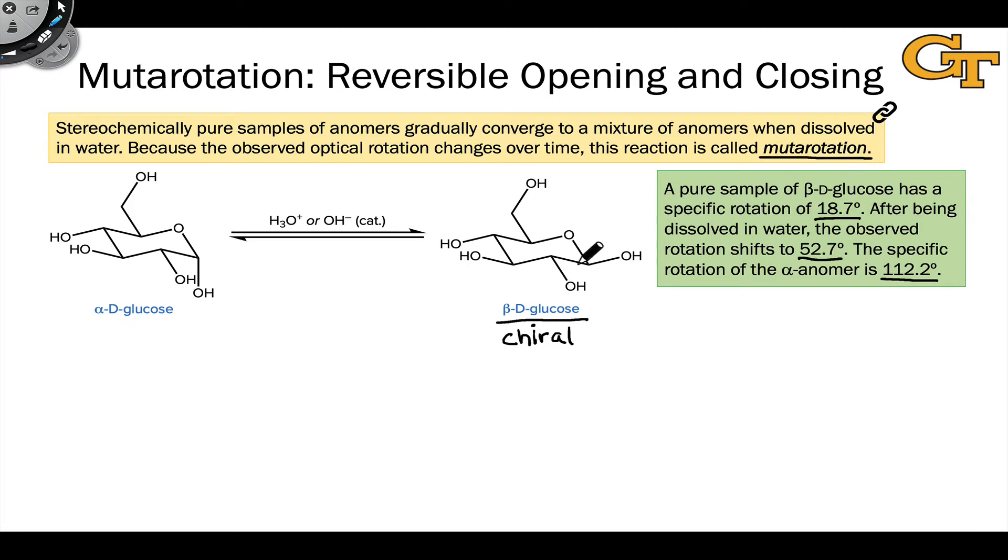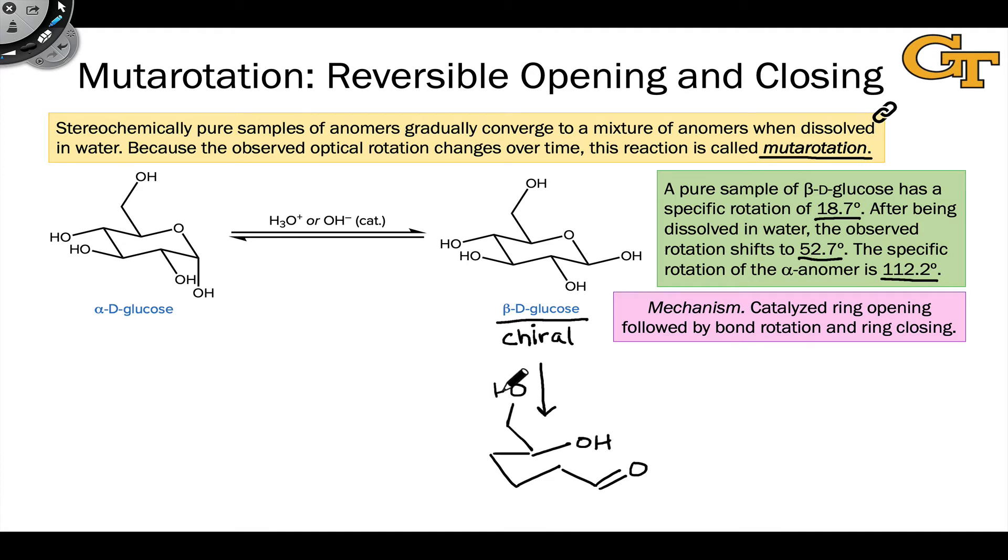Essentially what's happening is reversible opening and reclosing of beta-D-glucose to form some alpha-D-glucose. The mechanism involves first the reversible ring opening of beta-D-glucose to form the open chain form.